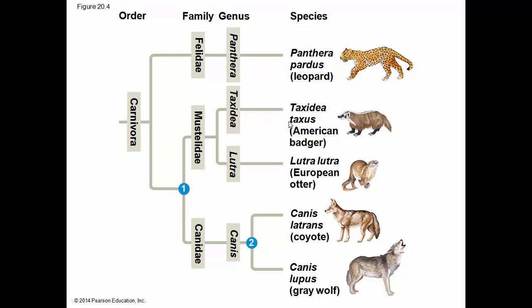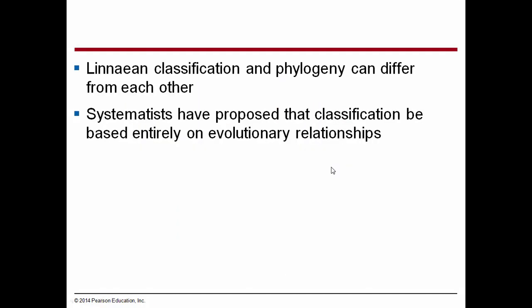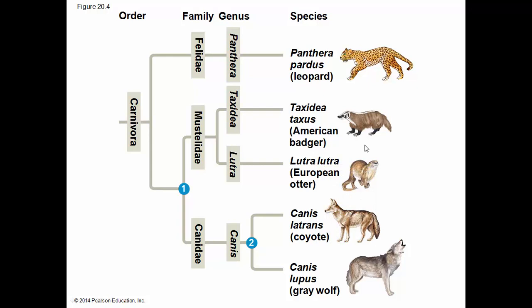The Felidae includes the large cats, the genus Panthera, which includes Panthera leo the lion, Panthera onca the jaguar, and Panthera tigris the tiger. All are in the genus Panthera. The species is the most specific term for each organism: the leopard, the American badger, the European otter, the coyote, the gray wolf. These common names have to be distinguished using the specific epithet, because Lutra lutra is the European otter and is not to be confused with Lutra canadensis, the North American otter.